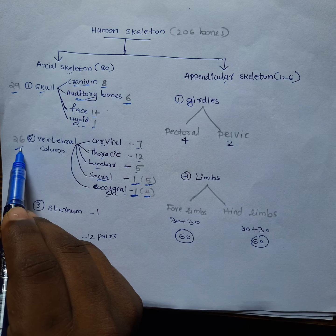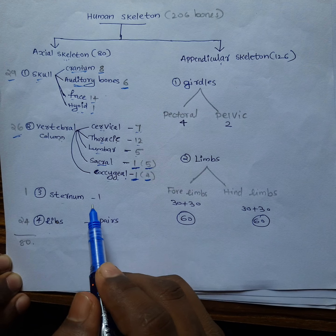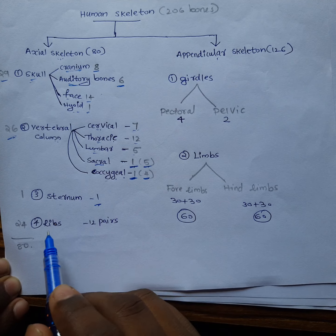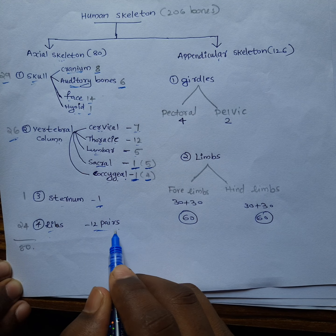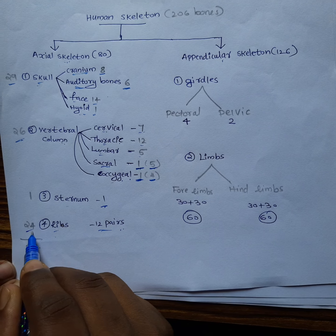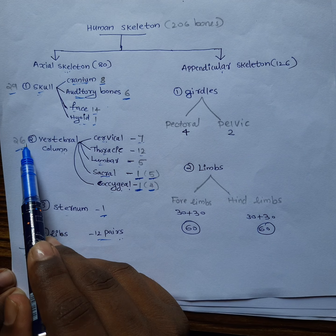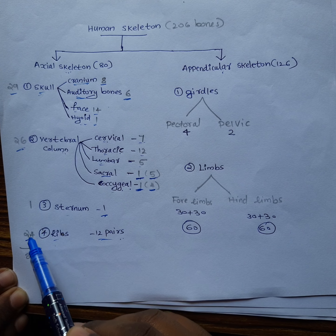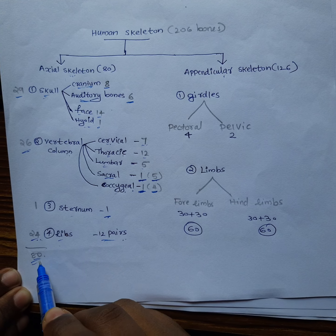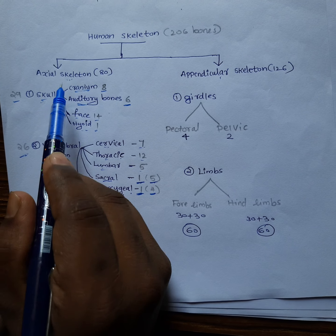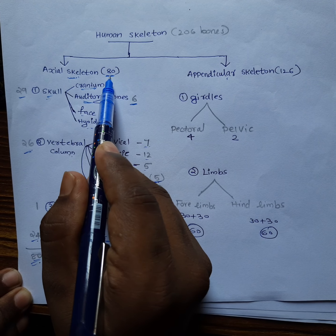Next, I'm taking the sternum — the sternum is a single bone. And ribs: there will be 12 pairs of ribs, so total there will be 24 bones. So if you are calculating 29 plus 26 plus 1 plus 24, the total will be 80. So the axial skeleton includes a total of 80 bones.